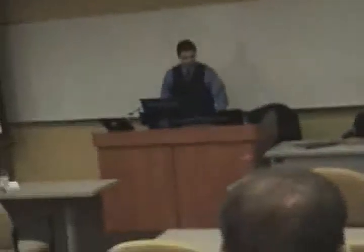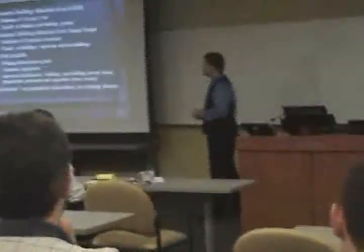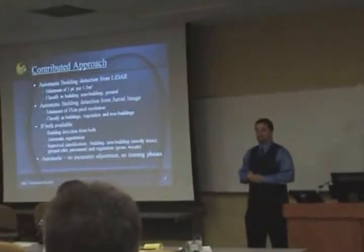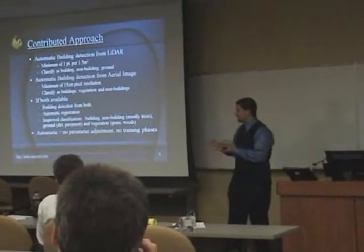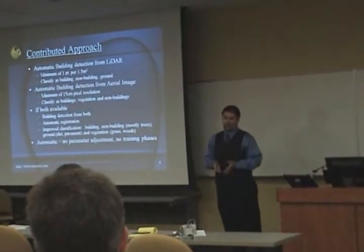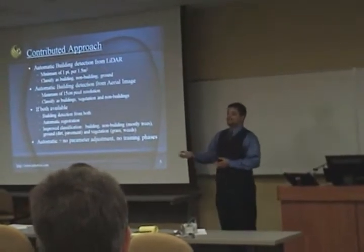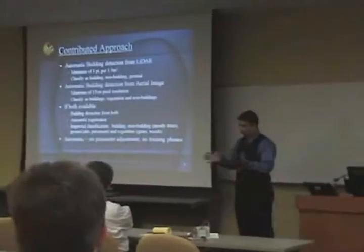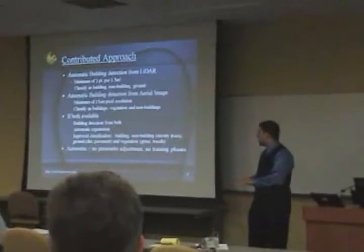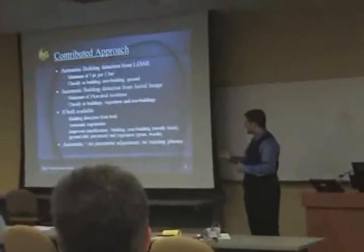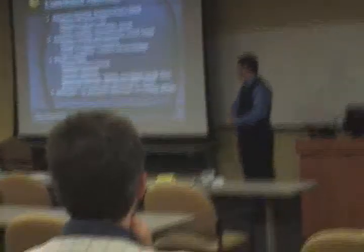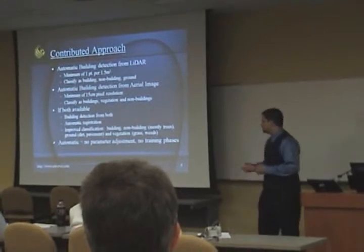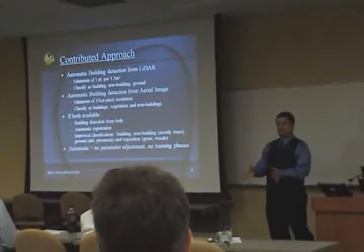These are the ideal features. For automatic building detection from LiDAR data, we'll assume a minimum of one point per 1.5 square meters point density. From the LiDAR-only approach, we classify entities as building, non-building, and ground. For aerial imagery, please have at least 15 centimeter pixel resolution, and we classify as buildings, vegetation, and non-building. If both are available, we automatically register them together and realize an improved classification with a slightly higher building detection rate, with classes for building, non-building (mostly trees), ground (dirt and pavement, not grass), and a separate vegetation class. All approaches are automatic — no changing parameters across datasets and no training phases.